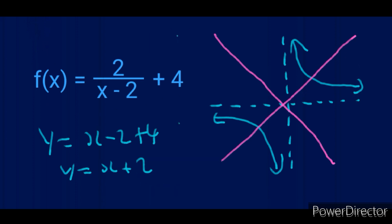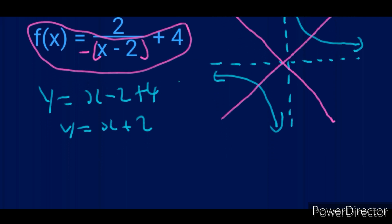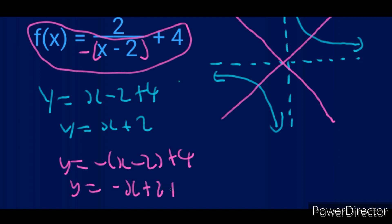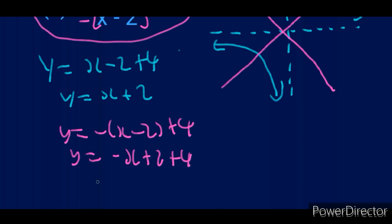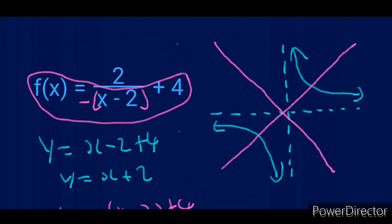To get the equation of the axis of symmetry with the negative gradient, you use a similar method. Put brackets around the denominator and place a negative outside. You still take everything except the numerator. So you end up with y equals -(x - 2) + 4, which gives y equals -x + 2 + 4, and therefore y equals -x + 6. This is the one with the negative gradient — the decreasing one.